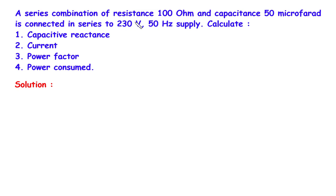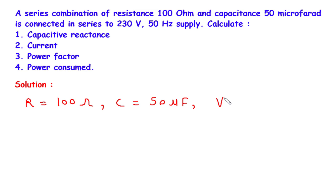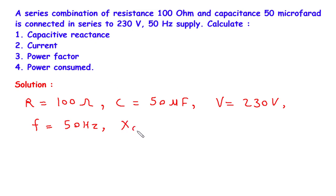Solution. First of all we will write what is given. The value of resistance is given: R is equal to 100 Ohm. Capacitance value is given: C is equal to 50 microfarad. Voltage value is given: V is equal to 230V, and frequency value is given: F is equal to 50Hz. We have to find capacitive reactance Xc, current I, power factor cos phi, and power consumed P.